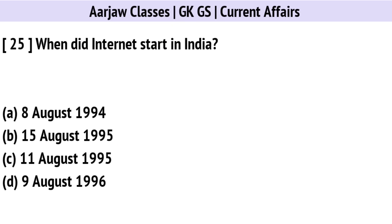When did Internet start in India? The correct option is B: 15th August 1995.